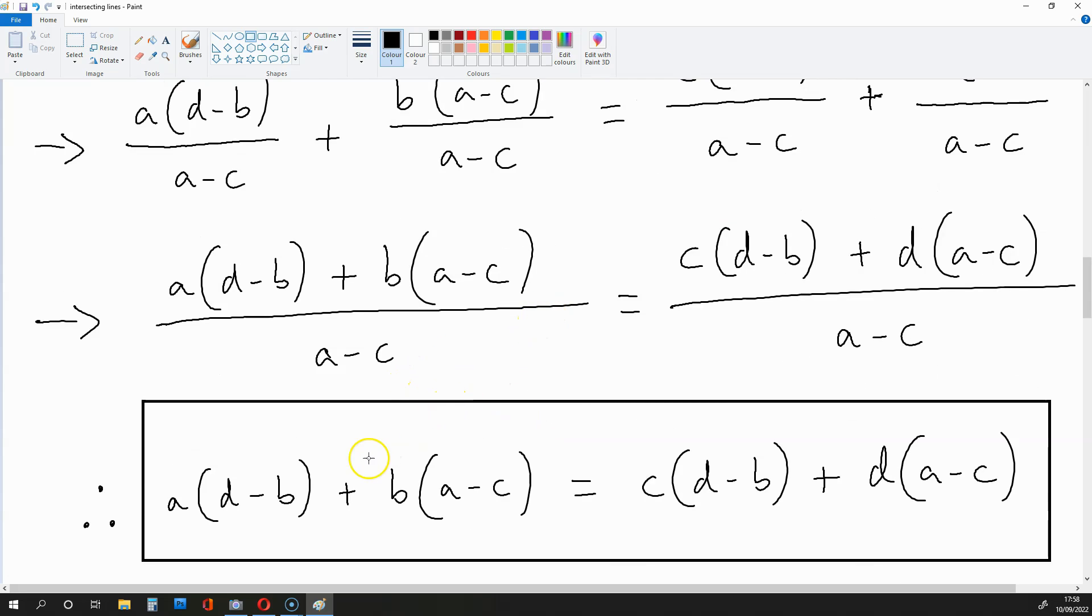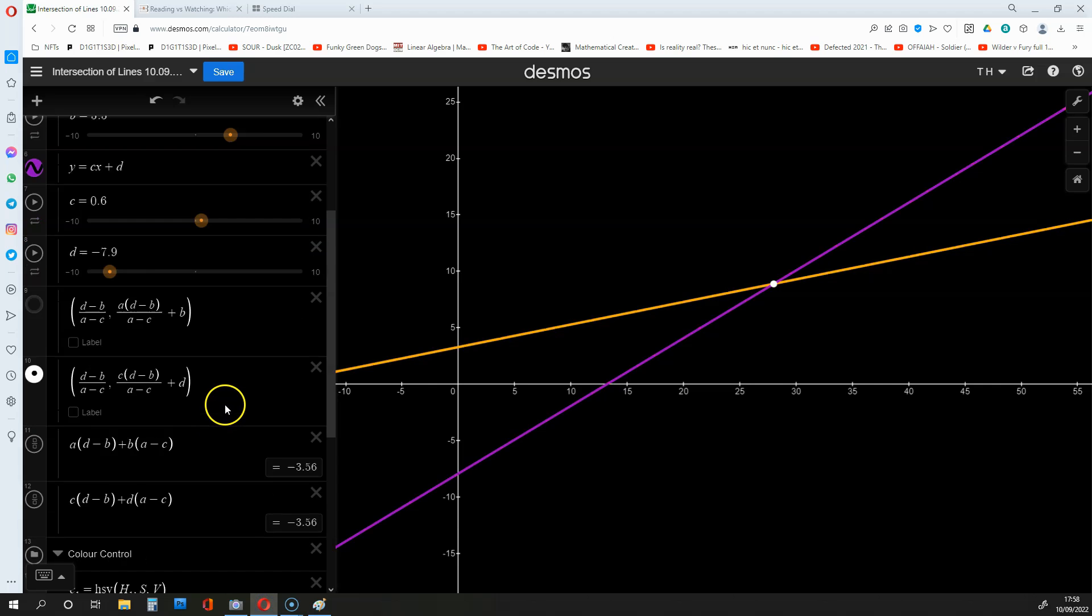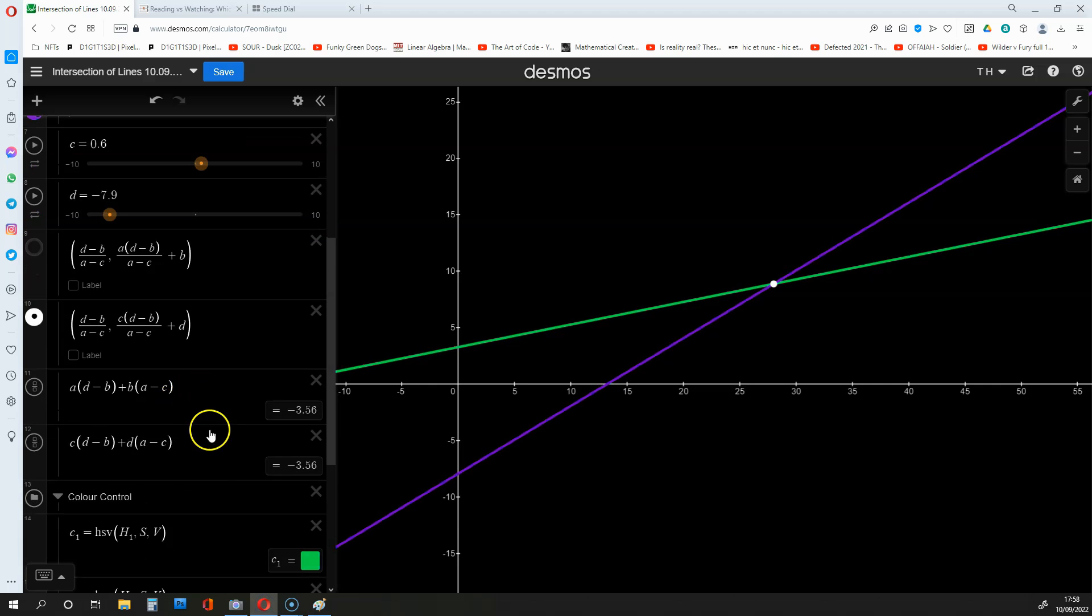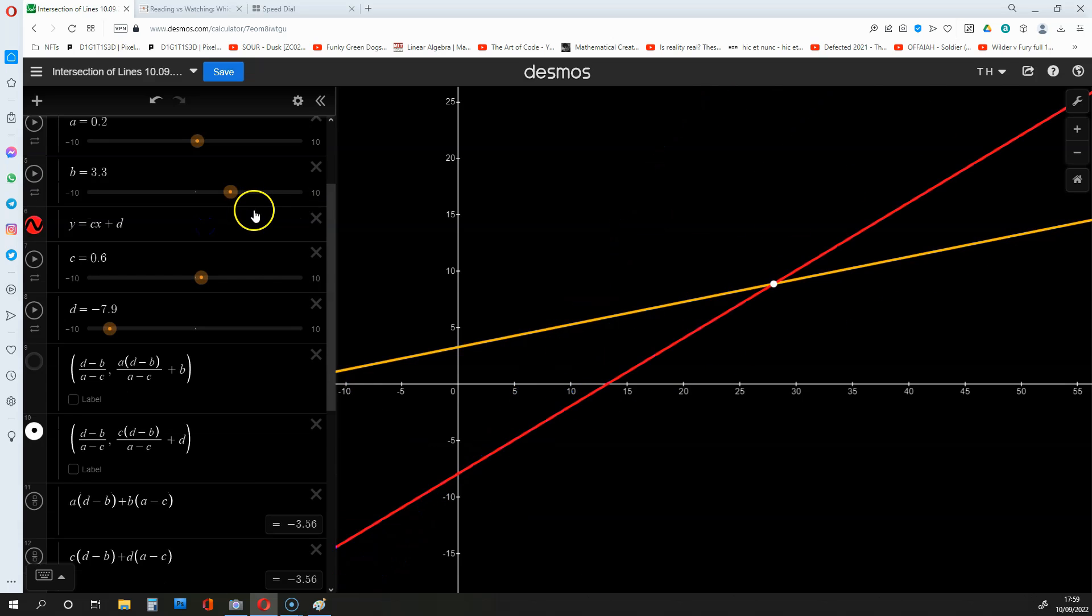And then you end up with A times D minus B plus B times A minus C is equal to C times D minus B plus D times A minus C. So you end up with this formula. And you can check this out. Check if it's true on this graph on Desmos as well. And you can change the variables to see if it's consistent.